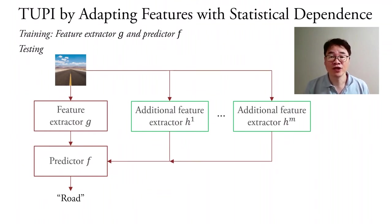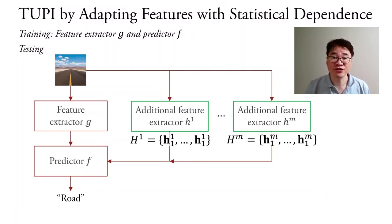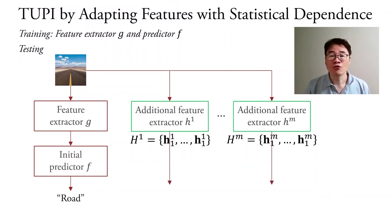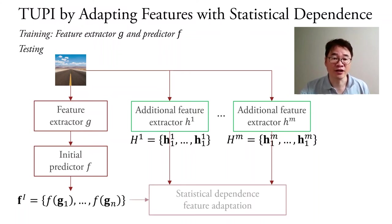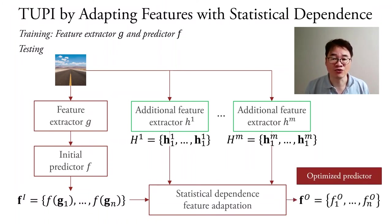So let's go back to the diagram of our TUPI problem statement and use the idea of adapting features with statistical dependence. First, let's declare our test time privileged features as H1 to HM. We are going to treat the trained predictor F as an initial predictor that produces a set of predictions FI. And then, we are going to use the HSIC and manifold denoising to adapt the features to produce an optimized prediction FO.